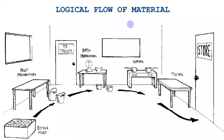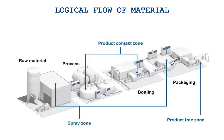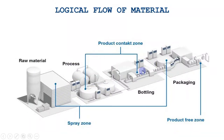The next point is logical flow of materials. Raw material enters from one point, goes to the preparation area, then batch preparation, then heating or processing, then filling and packaging, and then moves to storage. Another example: raw material enters from one point and exits as finished product from another point, following a logical flow through processing, bottling, and packaging.